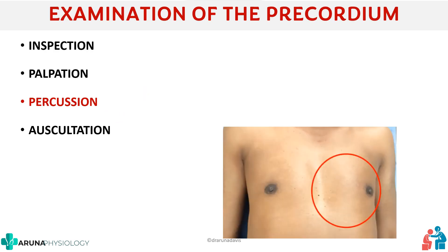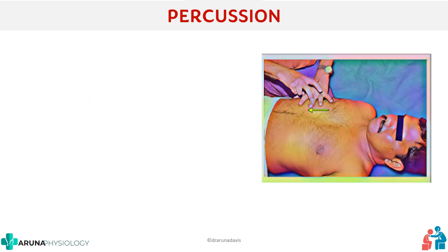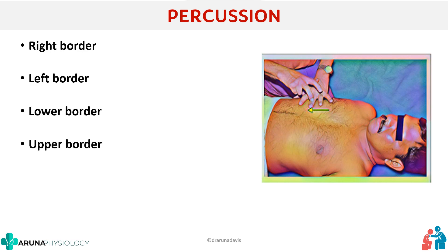Next we move on to the third step, which is percussion. In cardiovascular system examination, we percuss the heart borders — the right, left, upper and lower border. Remember, percussion of heart borders is very obsolete now and not done routinely by clinicians. But as part of an examination, we should have an idea of what this is.